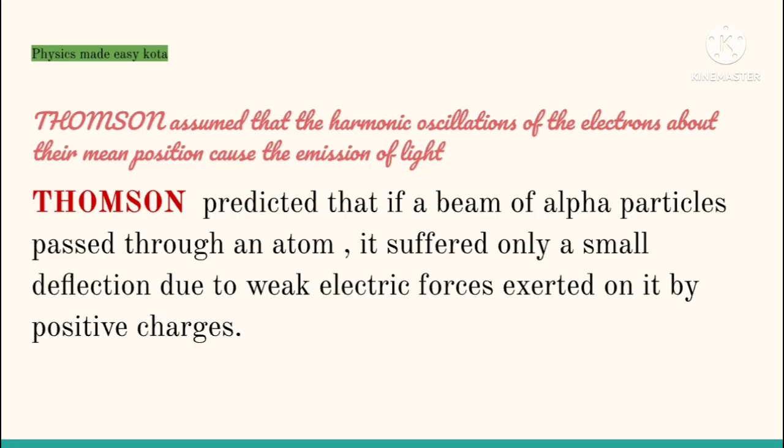Thomson assumed that the harmonic oscillations of the electrons about their mean position cause the emission of light. He also predicted that if a beam of alpha particles passed through an atom, it suffered only a small deflection due to weak electric forces exerted on it by positive charges.